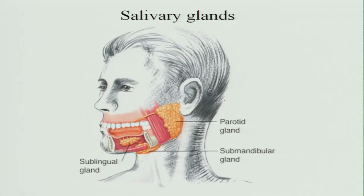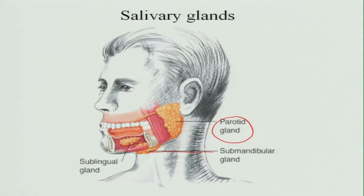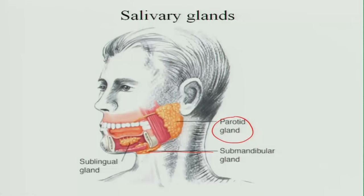Starting with the salivary glands — they are the first glands which produce liquid saliva along with enzymes, so that food is moistened and also digested to a certain extent. We have three types of salivary glands in the mouth: the parotid gland (the largest, present just below the ears/on the cheeks), the submandibular glands (present under the mandible), and the sublingual glands (present under the tongue). These glands start secreting saliva in response to the sight, thought, or presence of food.